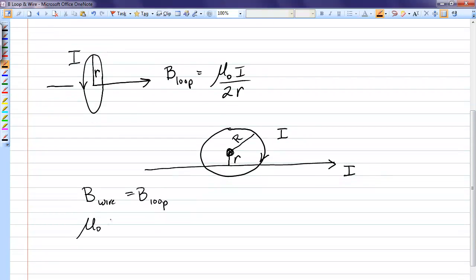So we have that mu not i over 2 pi r must equal mu not i over 2 R for the loop. And this tells us that small r must be exactly radius of the loop over pi, which is less than big R. That's how I know it intersects the loop.